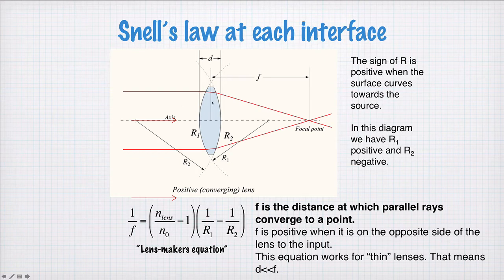f, as I said, is the point where the parallel rays converge over here, and f is positive when it's on the opposite side of the lens to the input light. This is an example of positive f.